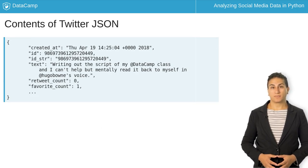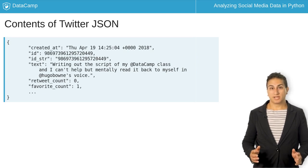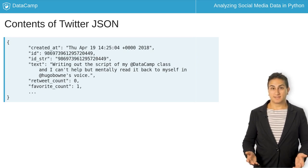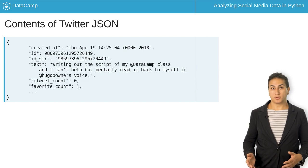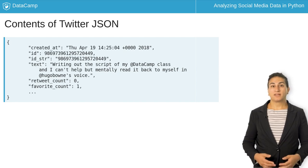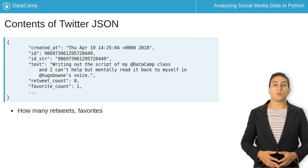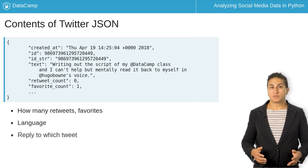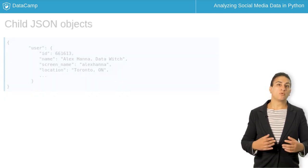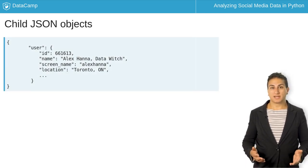Understanding the Twitter JSON is critical to knowing how to analyze Twitter data. There's a lot of data in a single Twitter JSON. For instance, in a single original tweet — that is, a tweet that is not a retweet or a quoted tweet — we have foundational information like the text, when it was created, and the unique tweet ID. You also have information like how many retweets or favorites it has at the time of collection, what language it's in, if it's a reply to a tweet, and to which tweet and to which user.